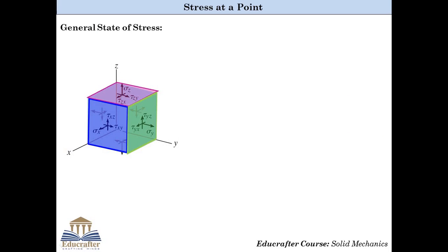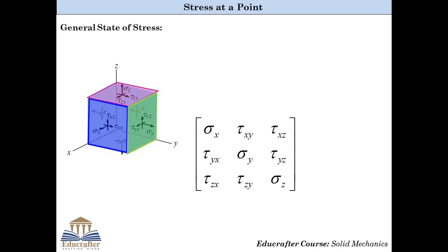So far we have seen that there are three stress components on each plane and there are three such planes. Therefore, nine components of stress must be specified in order to define the stress at a single point inside the body. One must ask: is stress a scalar or a vector? The answer is that stress is neither scalar nor vector — it is a tensorial quantity requiring a magnitude, a direction, and a plane on which it acts. Specifically, it is a second-order tensor, and hence the nine components are represented collectively in matrix form, known as the stress tensor.